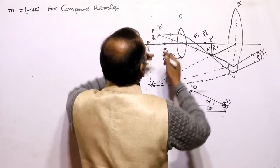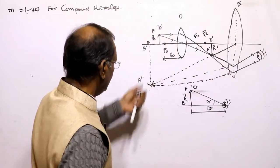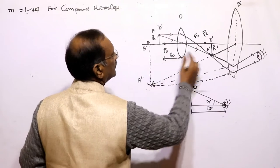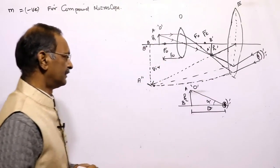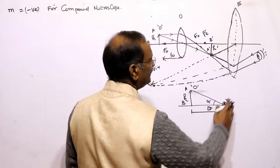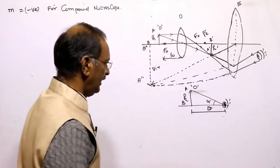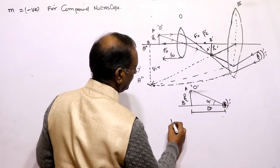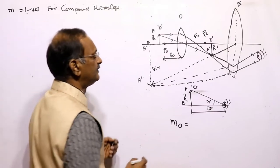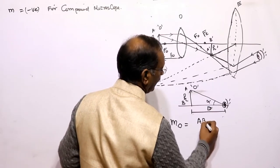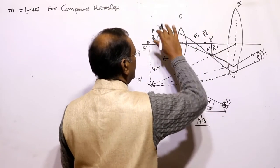The real image formed by the objective is further enlarged by the eyepiece, producing a virtual image of the original object. The magnification of the compound microscope equals the magnification of the objective multiplied by the magnification of the eyepiece.